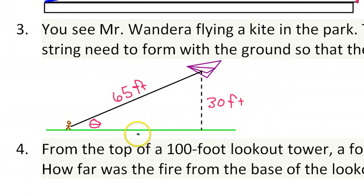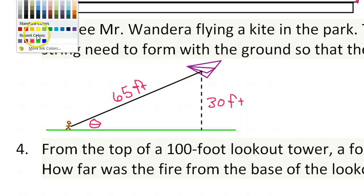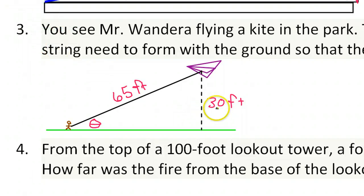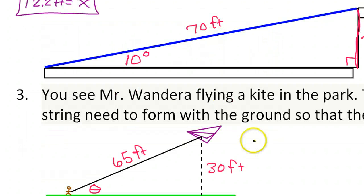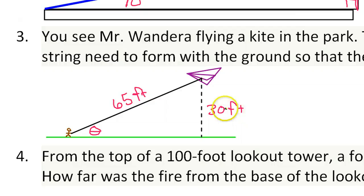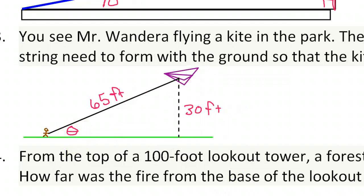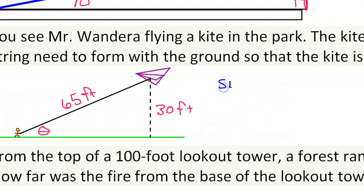You should be asking yourself which trig function is the one to use right now. Well, opposite and hypotenuse. Is this the same situation we were in before? Yeah, I guess it is. So once again, we're going to do the sine function because sine is opposite over hypotenuse. I'm using the variable theta, the Greek letter theta for this angle because it's traditional to use theta for angles. So get used to it.